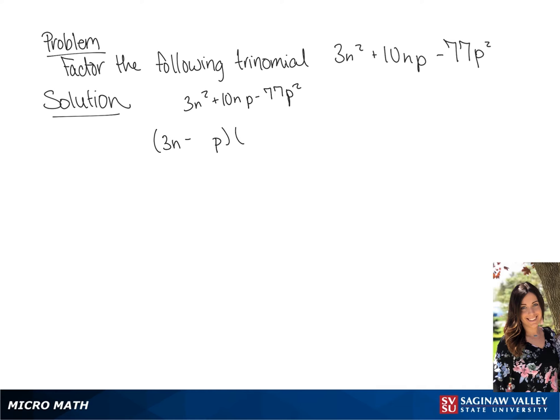One's going to be negative and one's going to be positive because the 77 is negative. So we know that 11 and 7 are both factors of 77.